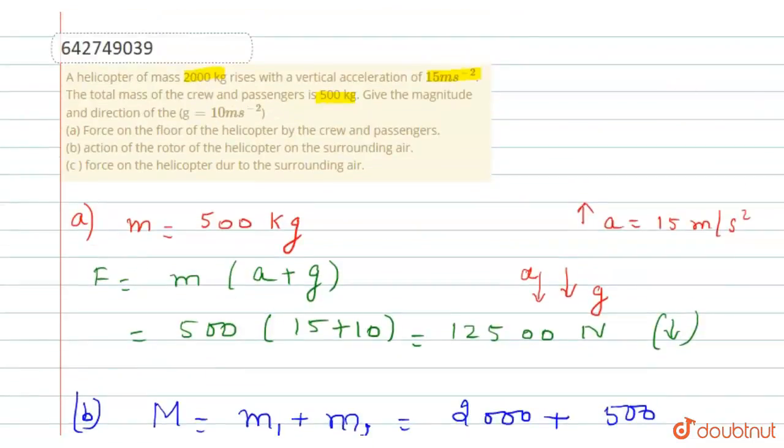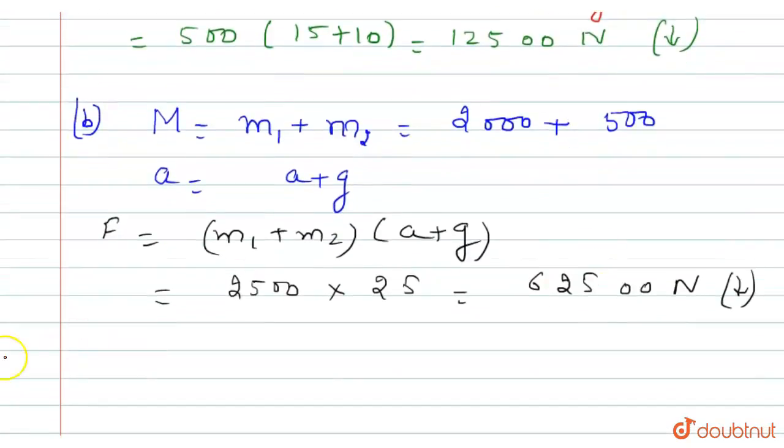Now part (c): force on the helicopter due to surrounding air. The force on the helicopter due to surrounding is the same force, that is 62,500 newton. But this force F' is in the opposite direction of F, so we can write it as minus 62,500 newton, but it is in the upward direction.